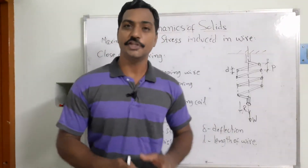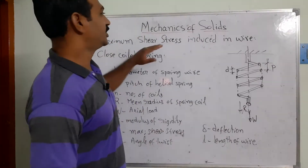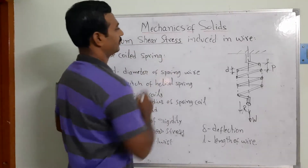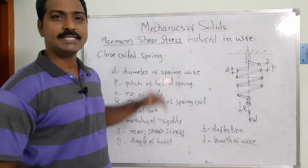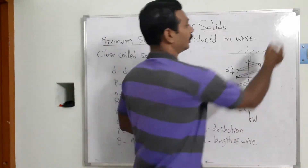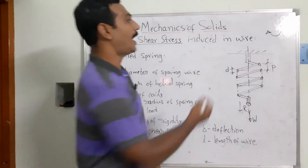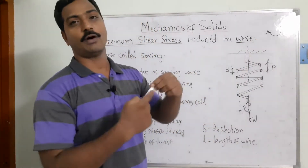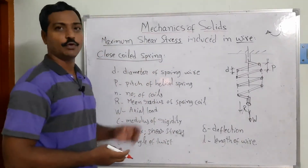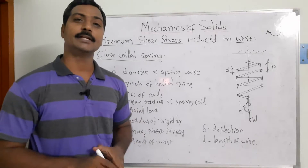Welcome to the learning of engineering tutorials. In this video lecture we are trying to learn the maximum shear stress induced in a wire. The maximum shear stress develops when a member is subjected to a tangential force or torsional loads. In this case, the wire is rounded into a helical form — a closed coil spring — which is one of the most highly elastic elements because of its shape.